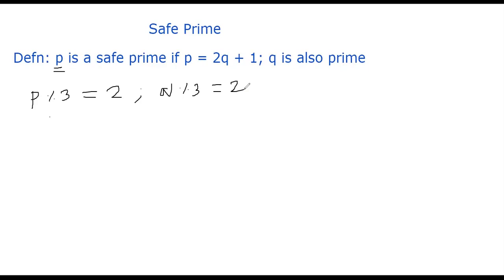Of course, you will not get 0 as the reminder. Otherwise, it means that p is a multiple of 3. But that's not possible because a prime number cannot be multiple of 3. So the reminder has to be either 1 or 2. So let's consider the case the reminder is 1. What happens if p mod 3 is 1?